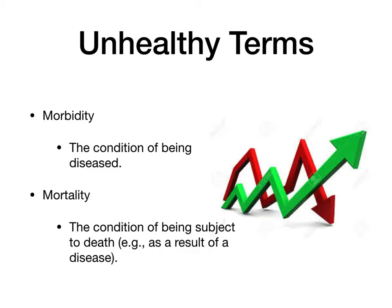Both of these terms are typically expressed as a rate within a population. For example, we might say that morbidity rates increased as health care services within a community decreased. Mortality rates, on the other hand — we could say that mortality rates of people with type 2 diabetes increased as access to treatment for that disease decreased.